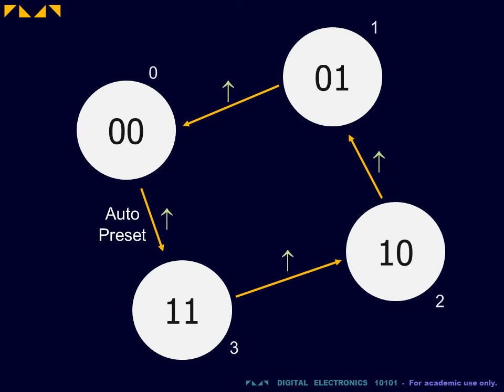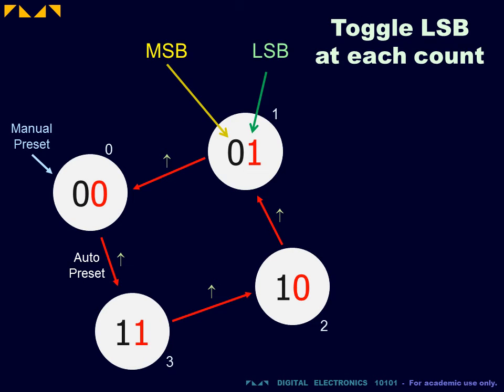The solution is to derive a counting algorithm that actually reverses the counting sequence when we count down. This counting down algorithm will proceed as follows. Step 1: As for counting up, when counting down, the least significant bit will toggle at each count.